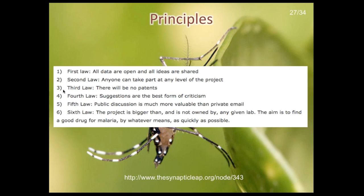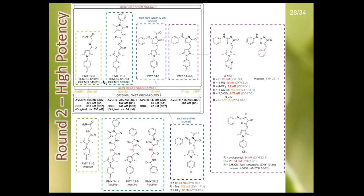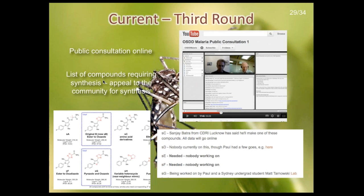We started out with a set of principles about how the project would work: all data and ideas must be shared, anybody can take part, no patents. There's also a law about no flame wars, and avoiding email at all costs. The sixth law is very crucial — the project exists as a thing and is not ours. It's something we are contributing to and leading, but it's meant to be beyond us. Anybody can contribute; they don't have to join our team, they join the project. We make variations in the chemical structure in our lab and collaborating labs around the world, send those to biological collaborators to test on the malaria parasite, and see if we can make improvements. We've already found very potent compounds this way in the last year or so.